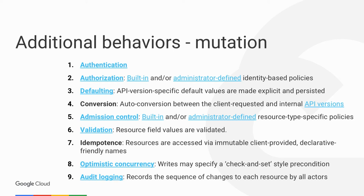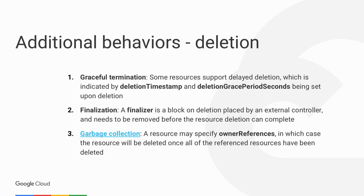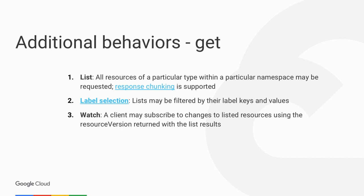In addition to CRUD and watch — which is a notification-style watch of resources — there are a whole bunch of additional behaviors that happen on every operation. For mutation, there's a list including authentication, authorization, validation, and optimistic concurrency. You can do a check-and-set style precondition: if the resource version is this, then do this other operation — otherwise modify and try again. There are also things that happen on deletion and on get. The point is not the actual items in that list — it's that if you've ever built any distributed system, you know these things are really complicated and hard to get right. The Kubernetes community has worked really hard and written really good code that should last a long time to solve many of these problems.